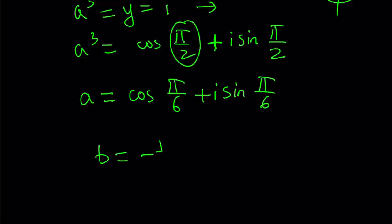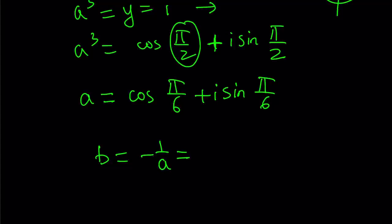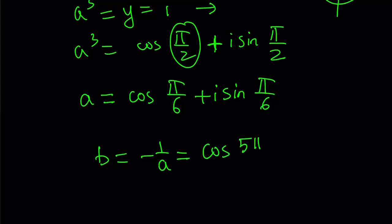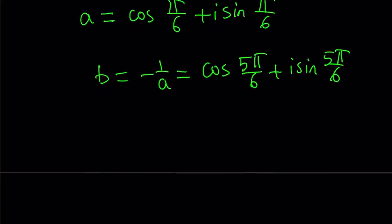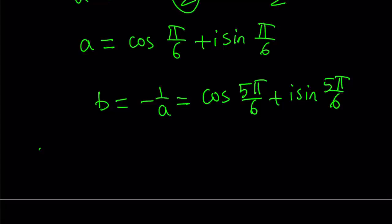Well, a and b are related by that formula, ab equals -1, so let's go ahead and find b from here. To keep a long story short, if you find the negative reciprocal of this complex number, you're going to get the following: cosine(5π/6) + i·sin(5π/6). It's just going to be that angle subtracted from π.